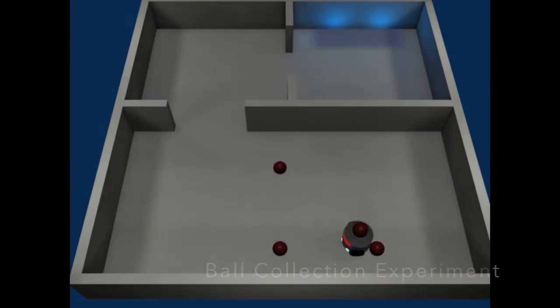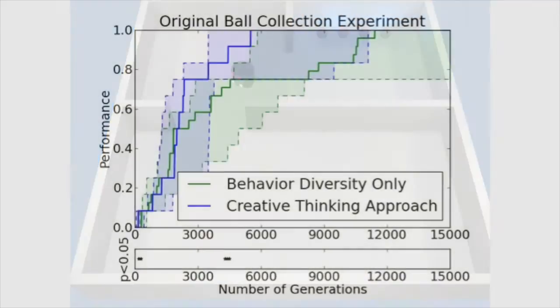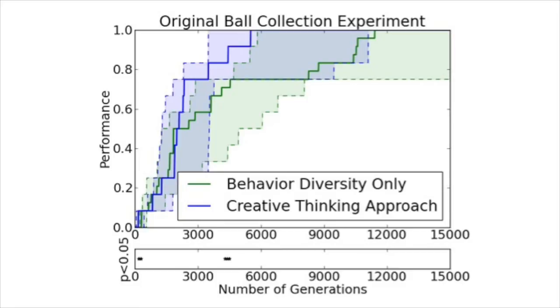To test this creative thinking approach, we evolve ball collecting robots. In this problem, the robots must collect balls and put them away in the illuminated area. Here, the creative thinking approach appears to perform better than behavioral diversity only, but the differences are rarely significant.